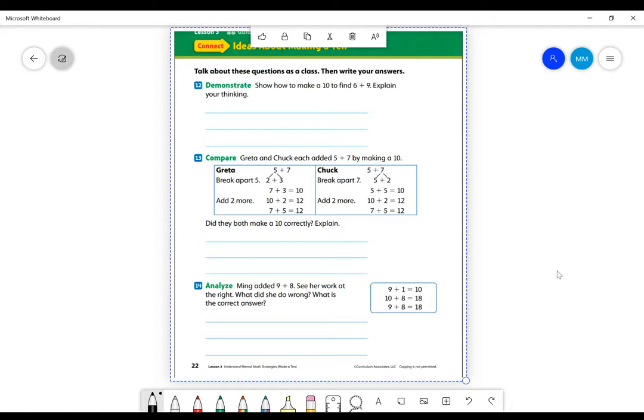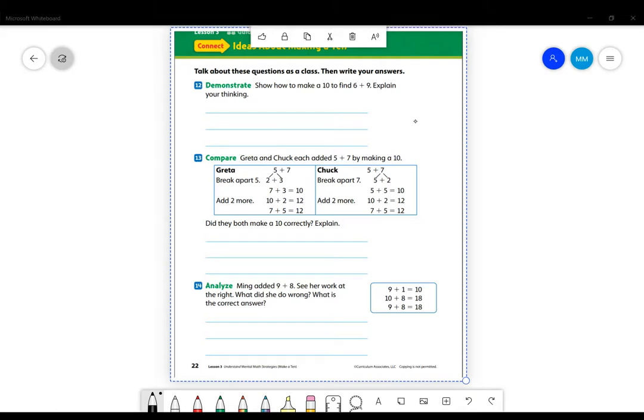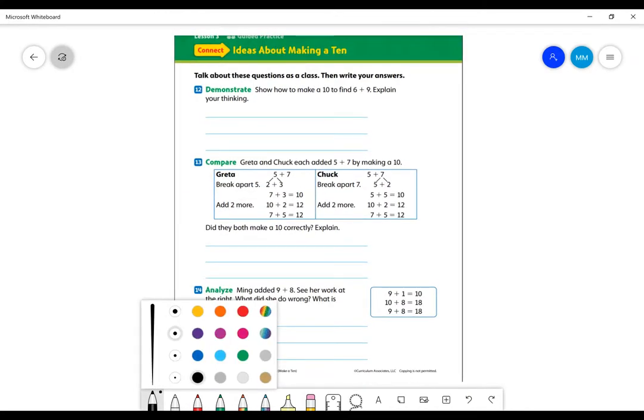So here's what I'm going to do today. We have three problems. We have one problem that I am going to show you how to use a strategy, but then I'm going to use a different strategy to solve this problem too. Because I can show different strategies, and some work better for me than others. So let's go ahead and get started. So number 12, it says show how to make a 10 to find 6 plus 9. I am going to write over to the side for 6 plus 9.